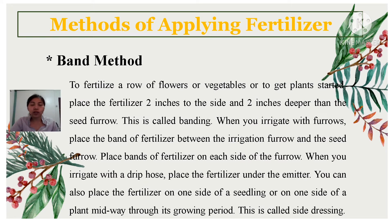Next is the band method. To fertilize a row of flowers or vegetables or to get plants started, place the fertilizer 2 inches to the side and 2 inches deeper than the seed furrow. This is called banding. When you irrigate with furrows, place the band of fertilizer between the irrigation furrow and the seed furrow. Place bands of fertilizer on each side of the furrow. When you irrigate with a drip hose, place the fertilizer under the emitter. You can also place the fertilizer on one side of the seedling during its growing period — this is called side dressing.